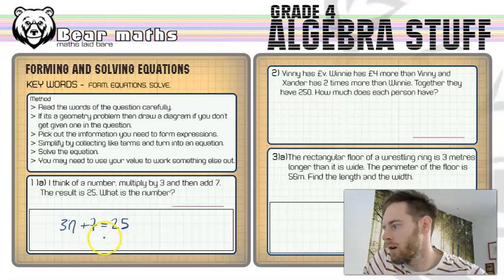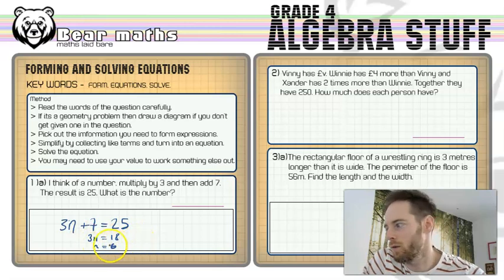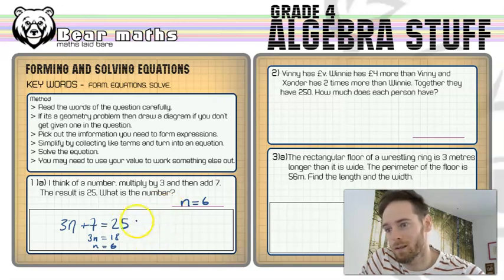We can now solve that equation. So we take away 7 from both sides and that leaves us with, if I take away 7 from 25, that's 18, and 3n is equal to that and then n would be equal to 6 because I would divide both sides by 3. So the answer to that question is n equals 6. I will pause the video now and I will return with the question that is next in this box.